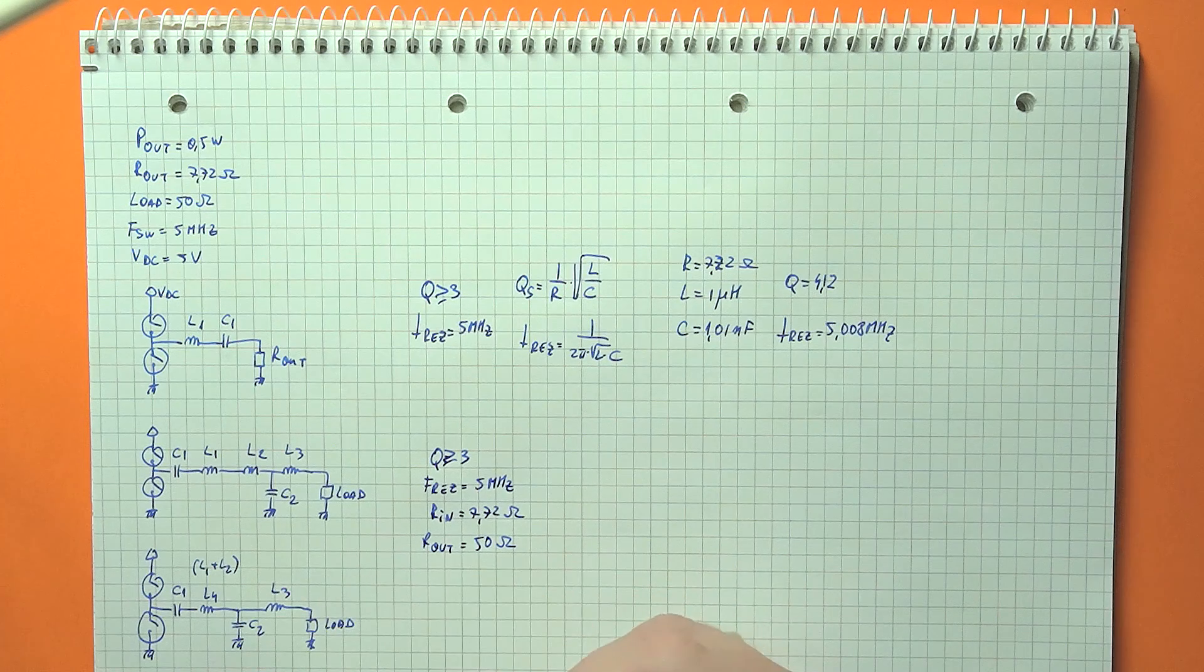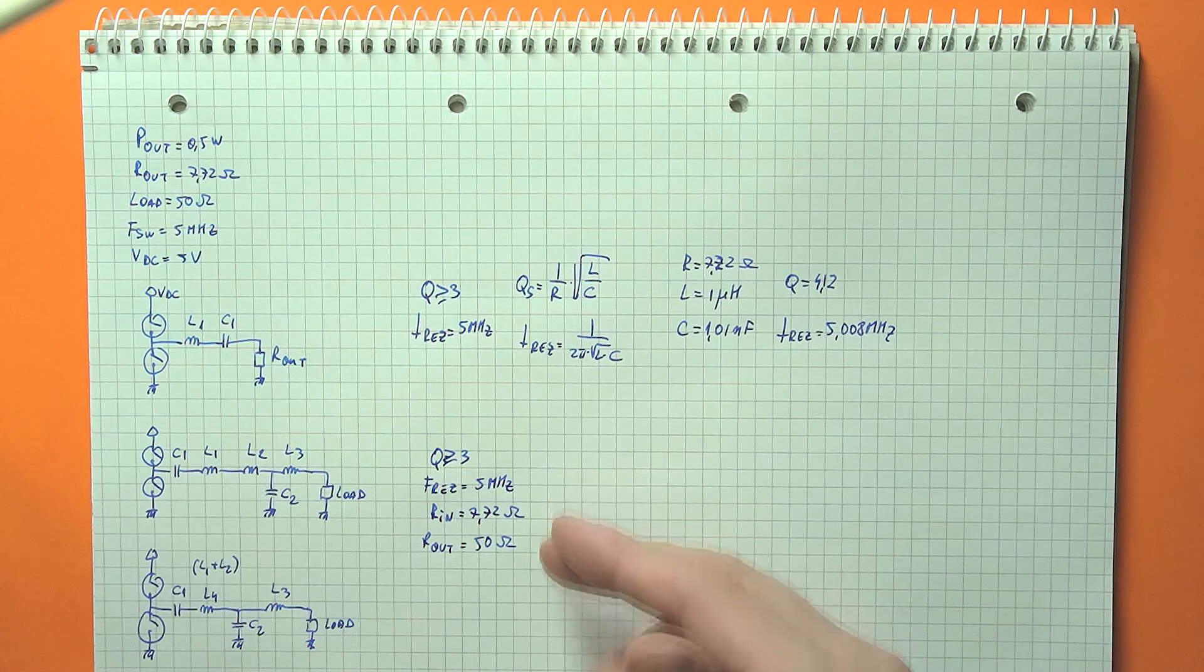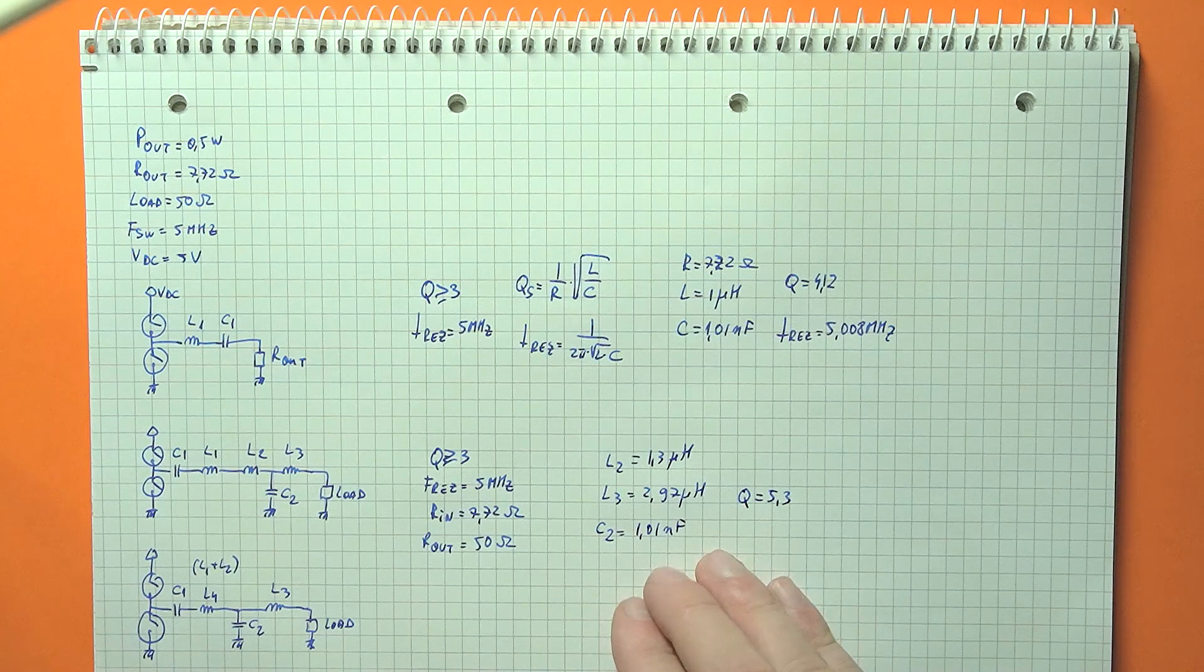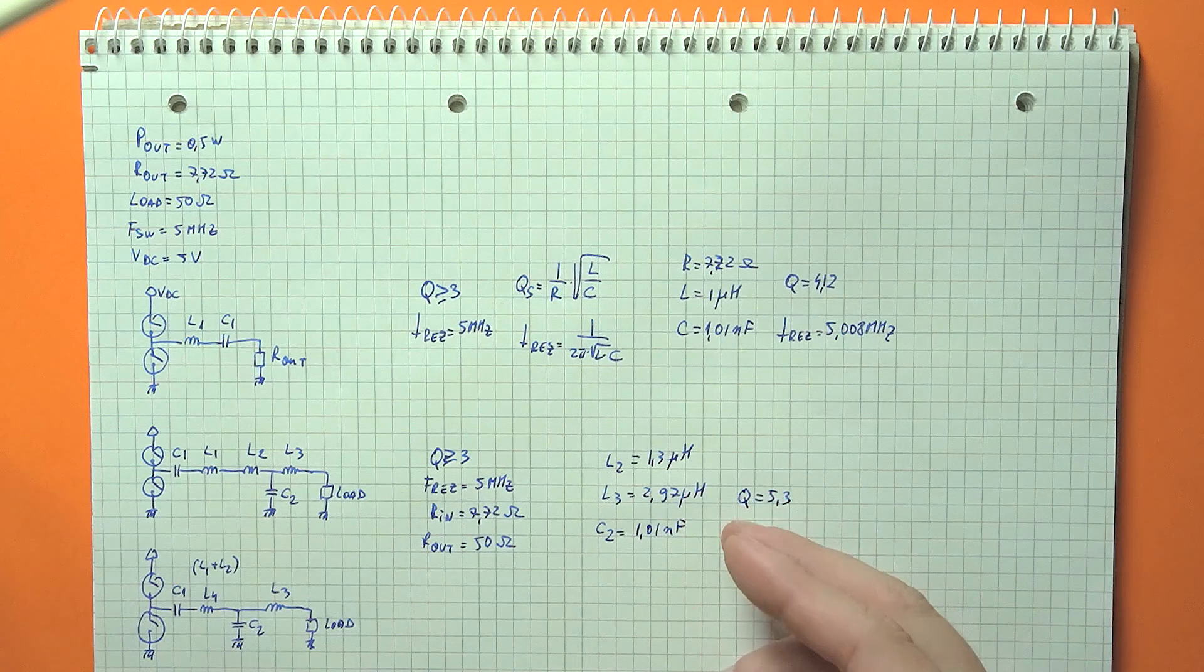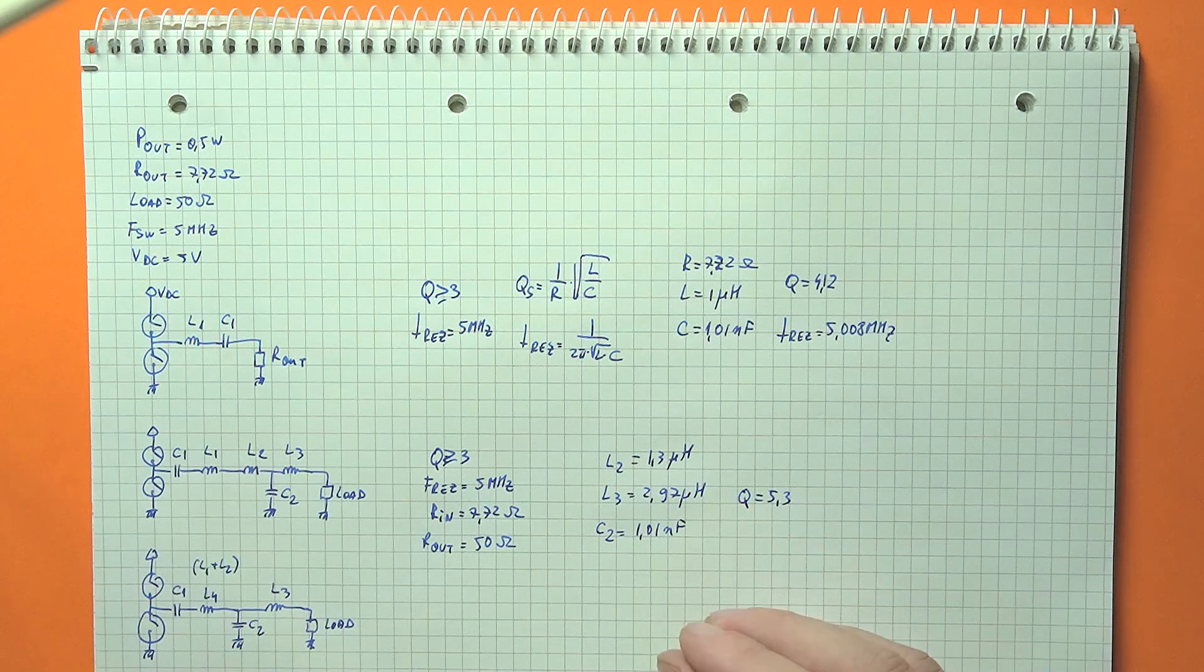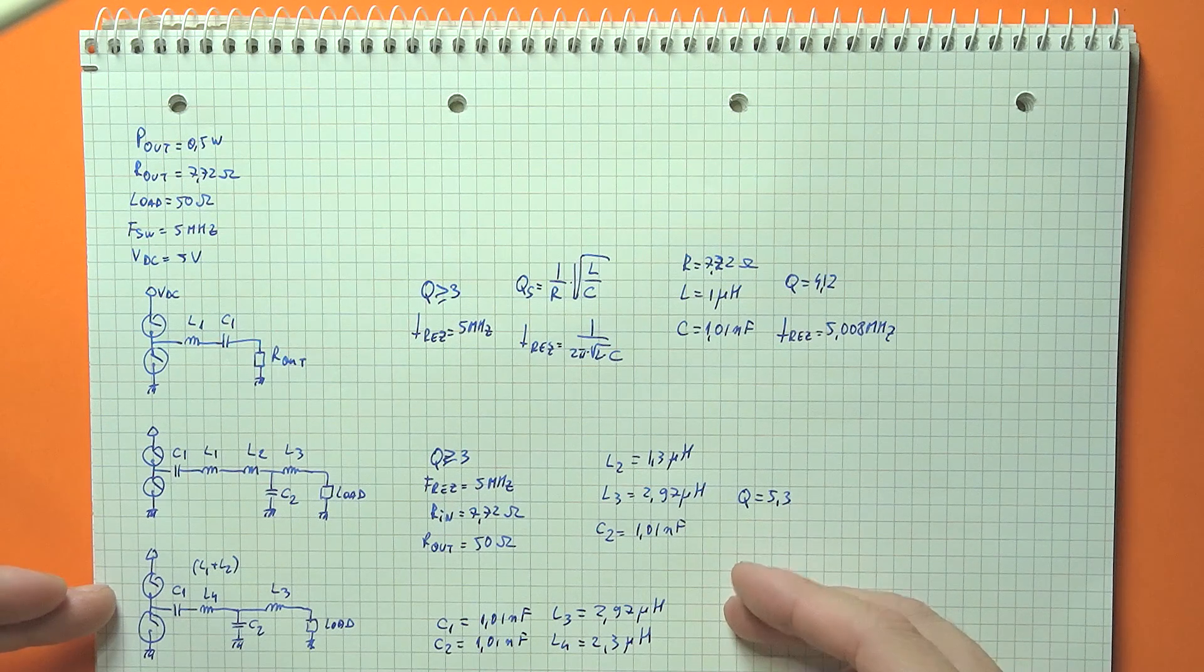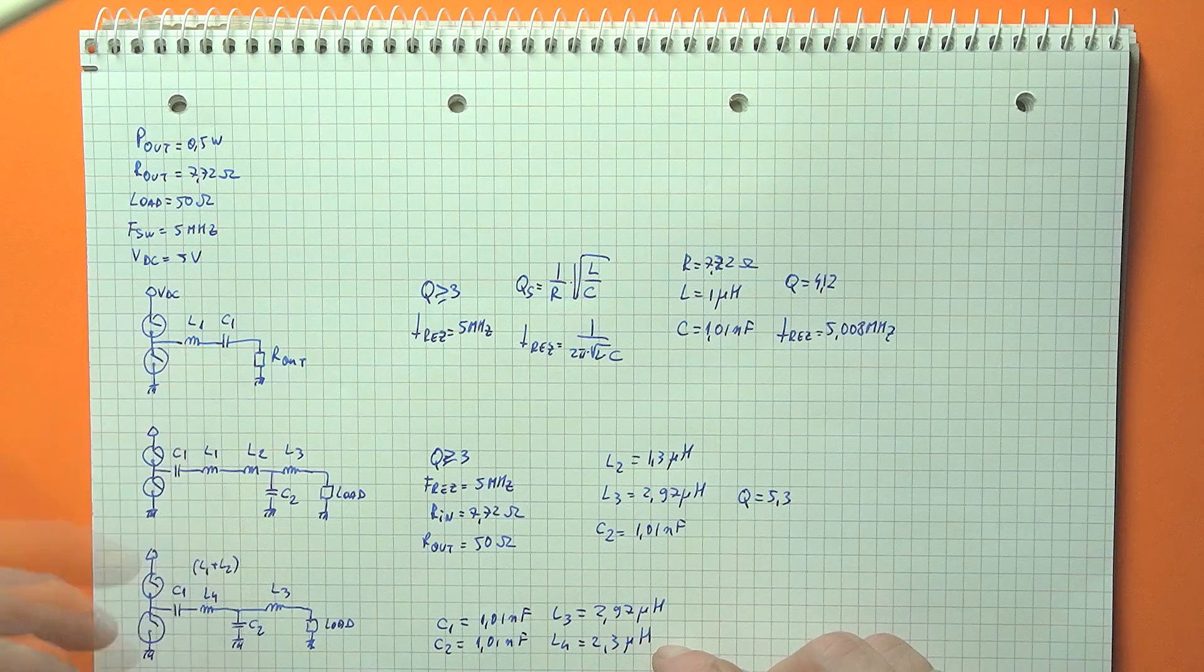Next we can look at the T-matching circuit. So again, we want a Q-factor of at least 3. We have our defined input and output resistances, so 7.72 and 50, and I used an online calculator for this. I'll leave the link in the description. And playing around with the values, I came up with this set. So having a 1.01 nF capacitor, 1.3 microhenry inductor on the amplifier side and 2.97 microhenry inductor on the load side, we get a T-filter with a Q-factor of 5.3. Finally, when combining the two circuits, we are left with these four components, one of them being the 2.3 microhenry inductor, which is the sum of the two individual inductors from the two circuits.